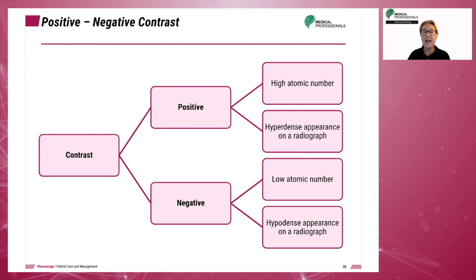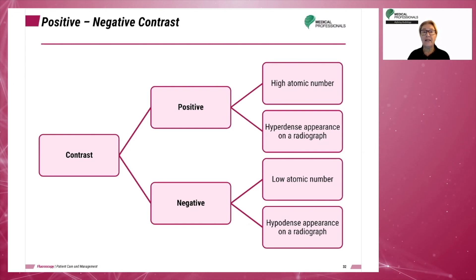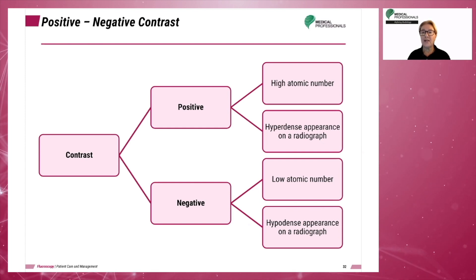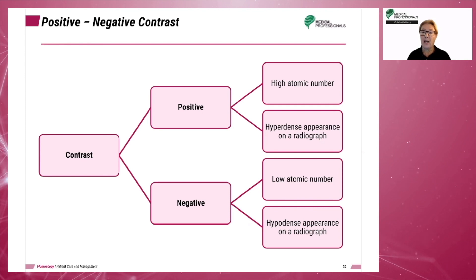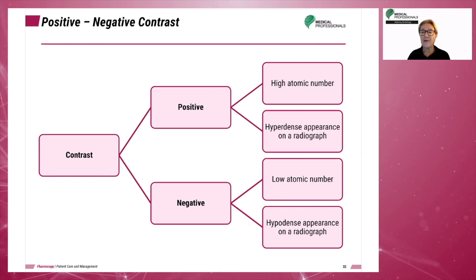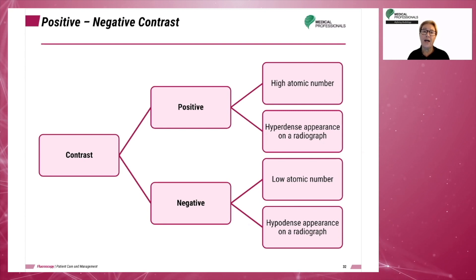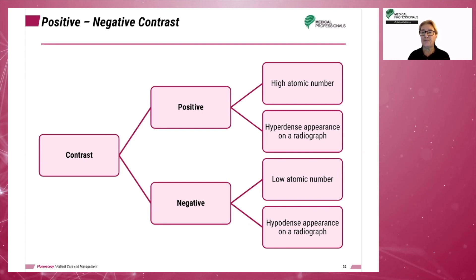Carbon dioxide is better because it is more easily absorbed through the intestinal wall, but room air is more common. The purpose of contrast is to provide differentiation between tissues.